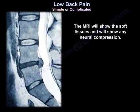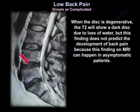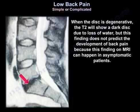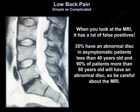MRI will show soft tissues and any neural compression. When a disc is degenerative, T2 will show a dark disc due to loss of water, but this finding does not predict the development of back pain because it can appear in asymptomatic patients. MRI has a lot of false positives: 35 percent of asymptomatic patients under 40 years old have an abnormal disc, and 90 percent of patients over 60 years old will have an abnormal disc — so be careful about MRI.